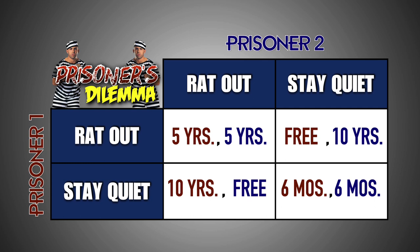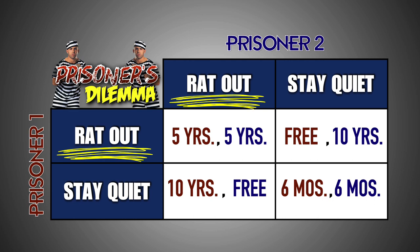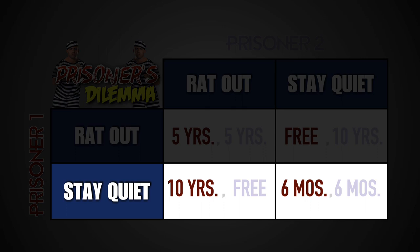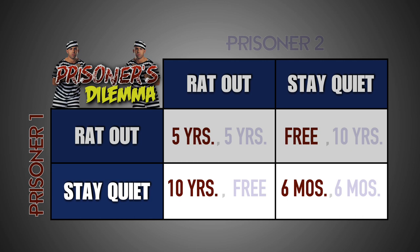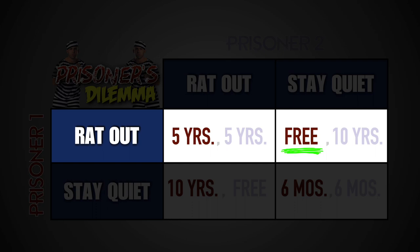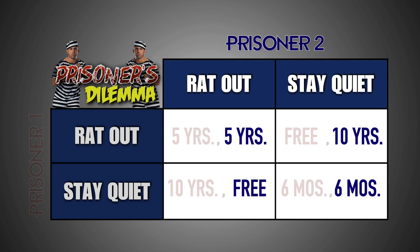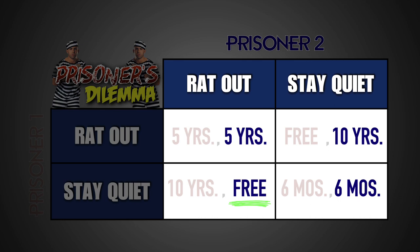For both players, the most desired payoff is to go free and avoid jail at all costs. However, the only way to achieve this payoff is to rat out the other prisoner and blame them for the crime. Without knowing the other player's potential payoffs, each player is only aware of their own. Prisoner 1 knows that staying quiet about the crime guarantees that he goes away to jail for either 10 years or 6 months. The only strategy that allows him the possibility of walking away and avoiding jail time is to rat out his accomplice. Because he has the same two strategies and faces the exact same payoffs, Prisoner 2 has the same thought process as Prisoner 1.